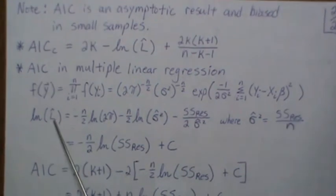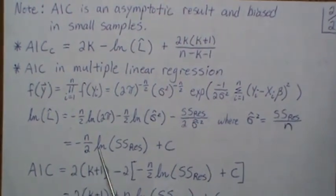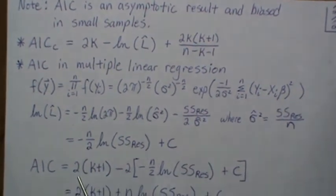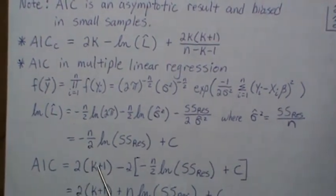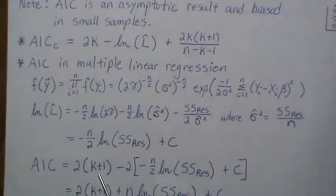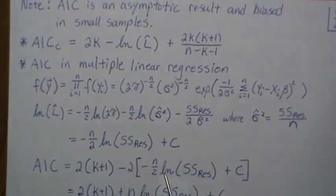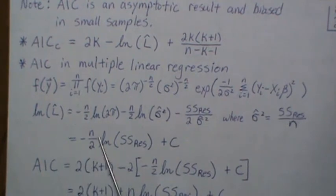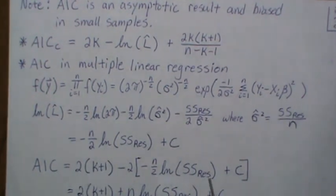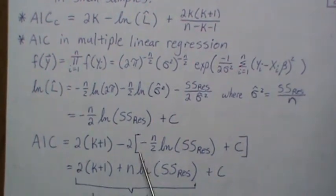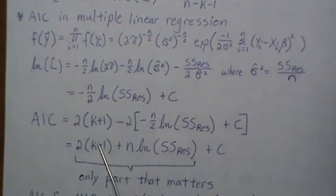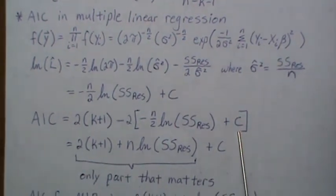What's left over is this—this is the log of the likelihood evaluated at the maximum likelihood. So the AIC becomes 2 times (K + 1)—because we have beta_0, beta_1 through beta_K—minus 2 (part of the AIC formula), and that goes in here.